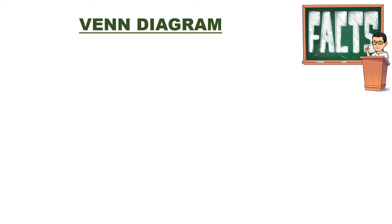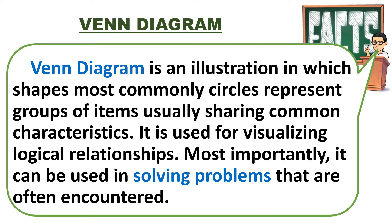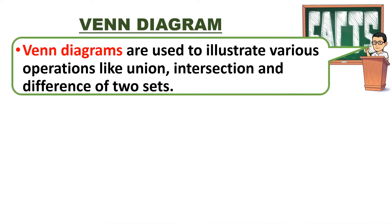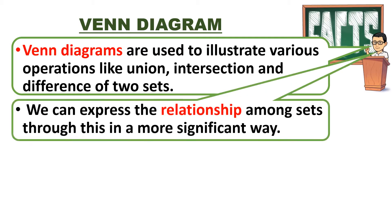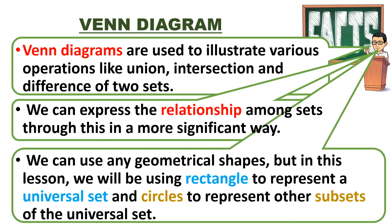Let us now define what a Venn Diagram is. A Venn Diagram is an illustration in which shapes — most commonly circles — represent groups of items usually sharing common characteristics. It is used for visualizing logical relationships and can be used in solving problems that are often encountered. Venn Diagrams are used to illustrate various operations like union, intersection, and difference of two sets. We can use any geometrical shapes, but in this lesson, we'll be using a rectangle to represent the universal set and circles to represent other subsets of the universal set.